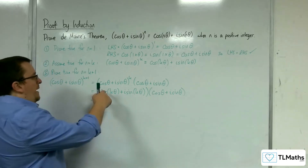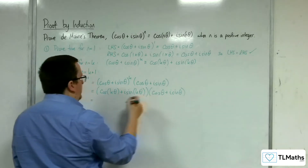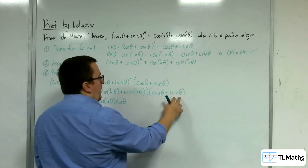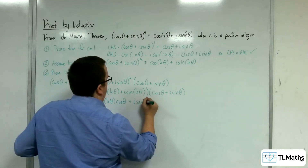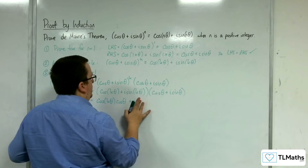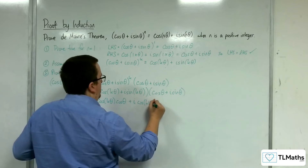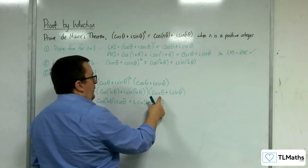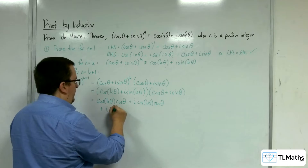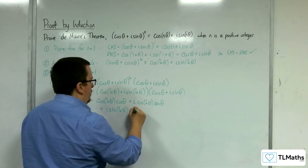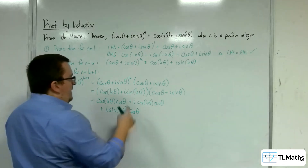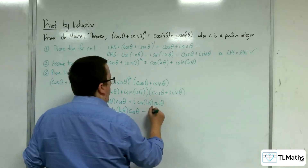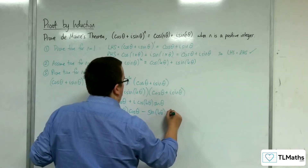Expanding this product, we get: cos(kθ)·cos θ, then cos(kθ)·i sin θ, then i sin(kθ)·cos θ, and finally i sin(kθ)·i sin θ. Since i² = −1, that last term becomes −sin(kθ)·sin θ.